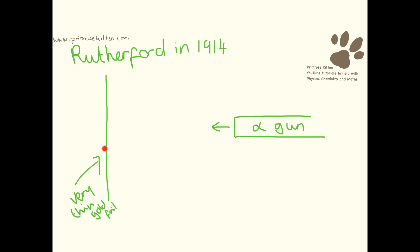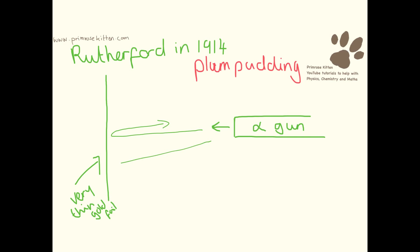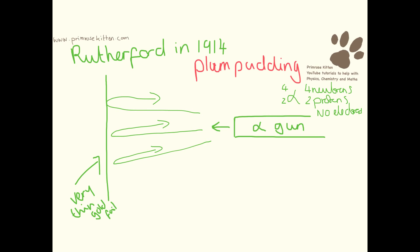He took a very thin sheet of gold foil and fired an alpha particle gun at it. What you would expect if it was a plum pudding model — you have to remember alpha particles have mass four and atomic number two, so that is two neutrons and two protons but no electrons. So alpha particles actually have a positive charge.